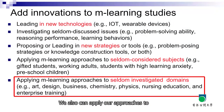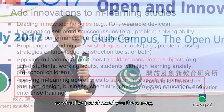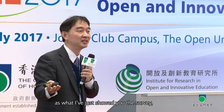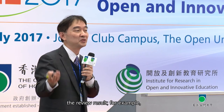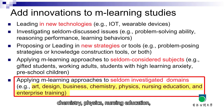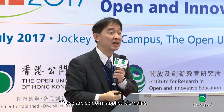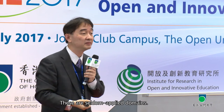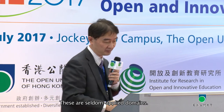The fifth strategy is to apply our approach to seldom-investigated domains. For example: art courses, design courses, business, chemistry, physics, nursing education, and enterprise training. These are seldom-applied domains.